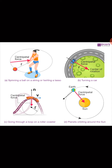In image B, a car is taking a turn around a curved circular road. The car is able to balance itself only because of the centripetal force which is acting at the center of rotation.